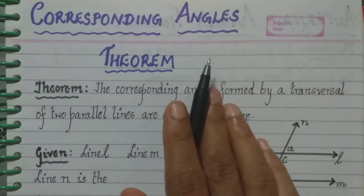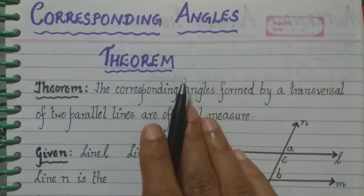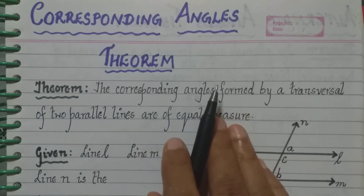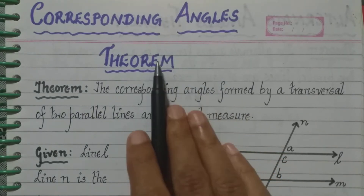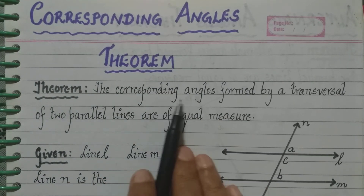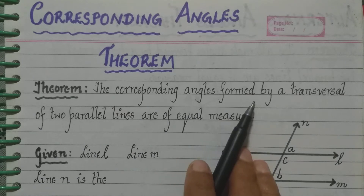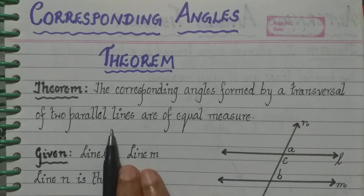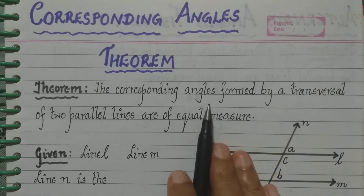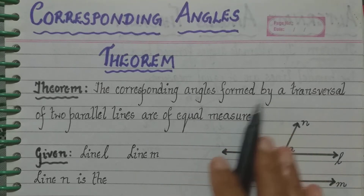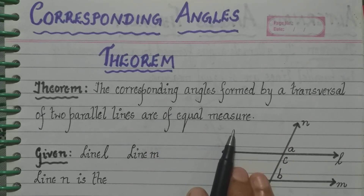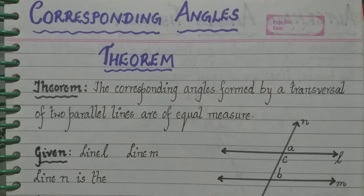Now let us go to the corresponding angles theorem. As I told you initially, corresponding angles theorem and alternate angles theorem are similar. So first let us see the corresponding angle theorem. The theorem states that the corresponding angles formed by a transversal of two parallel lines are of equal measure. There are parallel lines given to us and a transversal, and we have to prove that the corresponding angles are of equal measure.